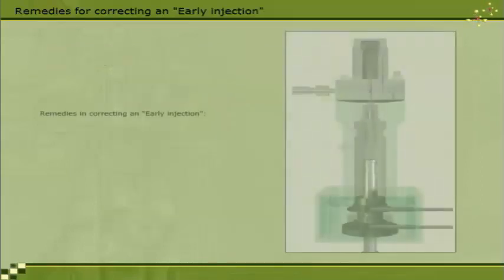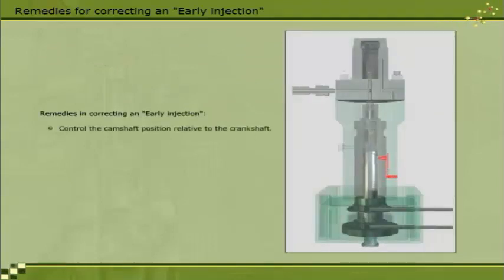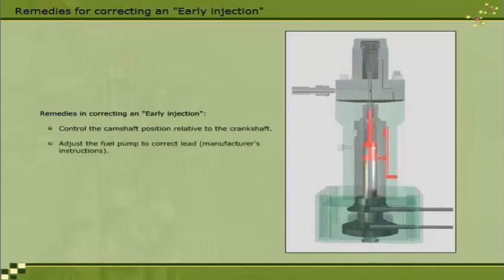Remedies for correcting an early injection: control the camshaft position relative to the crankshaft; adjust the fuel pump to correct lead, per manufacturer's instructions; adjust the VIT.